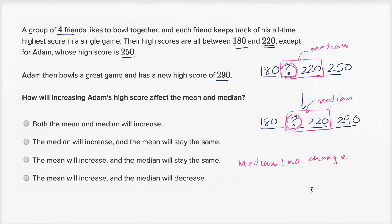So let's think about the mean now. Well, the mean, you take the sum of all these numbers and then you divide by four. And then you take the sum of all these numbers and divide by four.